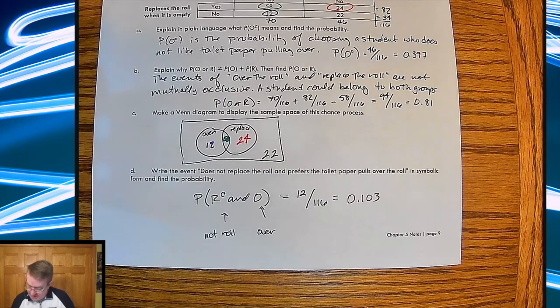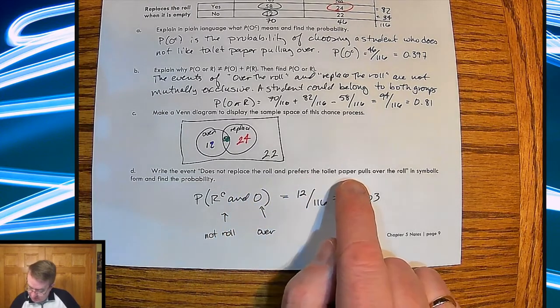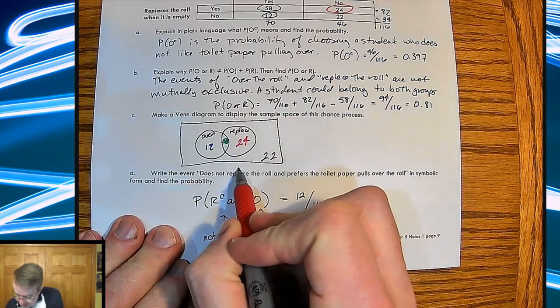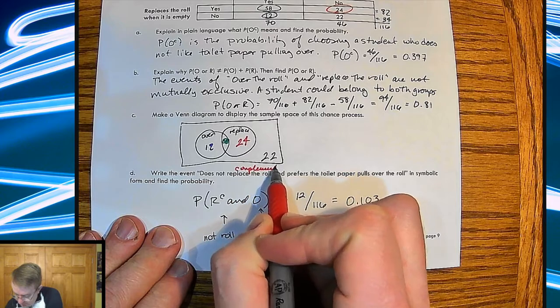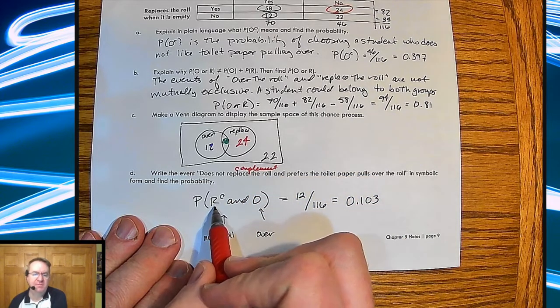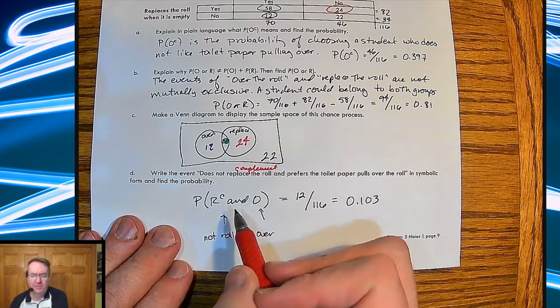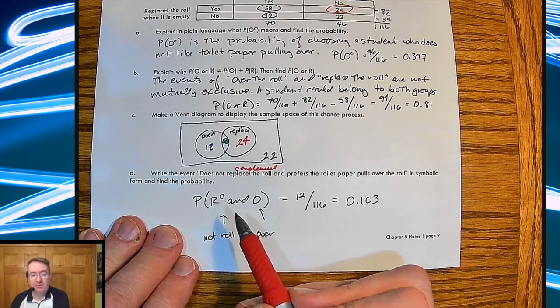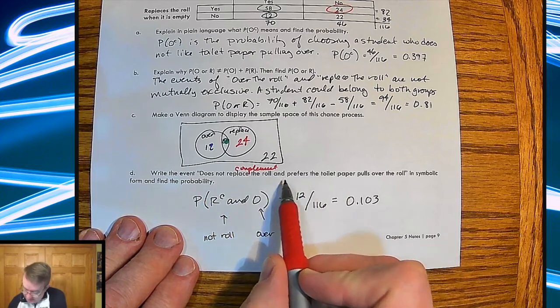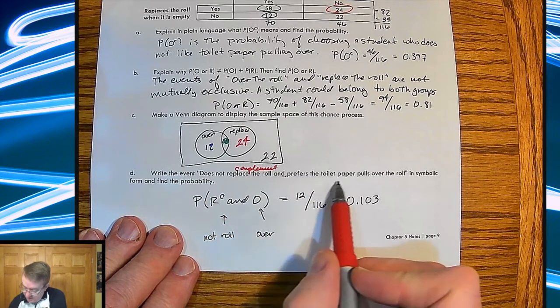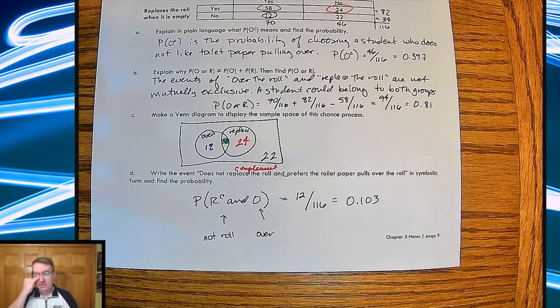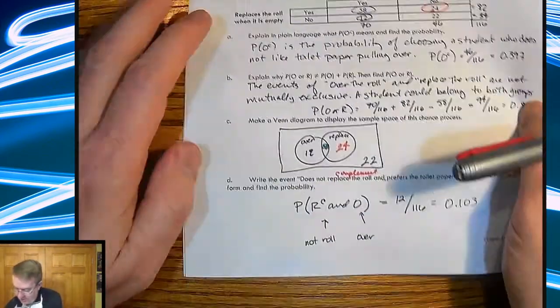Last question. Write the event, does not replace the role, and prefers the toilet paper to pull over in symbolic form. So, does not replace. So, this is your complement. So, that's why I have R of C, or R of C, complement of R. And this is not R to the C power. It is the complement of R. Vocabulary. It's important. It says and here. So, you have an and, and then you have a toilet paper over. Boom. Now, one of the things that you will also find is that sometimes you will see in books, questions, etc. And we're probably going to cover this more later, but I'll go ahead and mention it now.